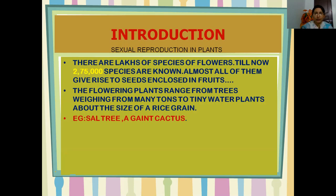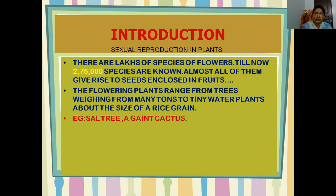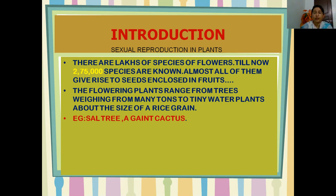Let's enter into our main topic with an introduction. There are so many species of plants — till now, 2,75,000 species are known. Almost all of them give rise to flowers and fruits which enclose the seeds. Flowering plants can range from many meters tall to very tiny plants. We will see what role the flower plays and how plants undergo reproduction.